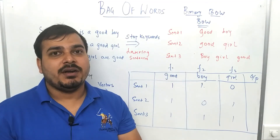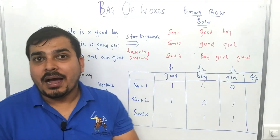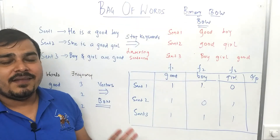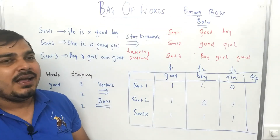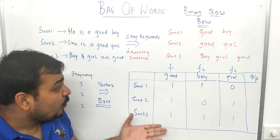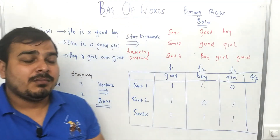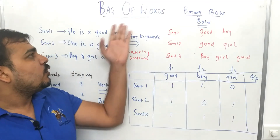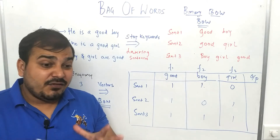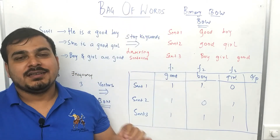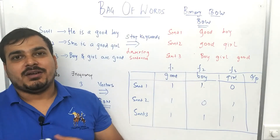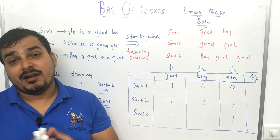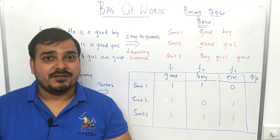To solve this, we have something called TF-IDF — Term Frequency and Inverse Document Frequency. We will compute TF-IDF using the same example to understand how it works and how it is better than Bag of Words. For sentiment analysis on small datasets, Bag of Words is okay, but for huge datasets please use Word2Vec — it is the best approach. In my next video I'll be covering TF-IDF. I hope you liked the video, please subscribe the channel. Thank you, bye!